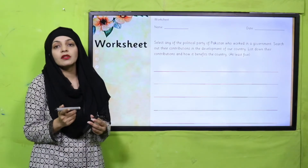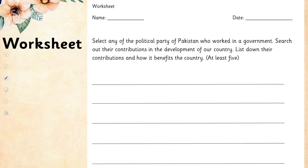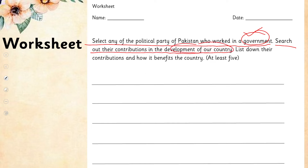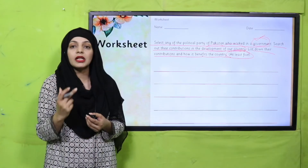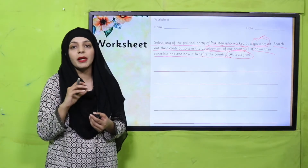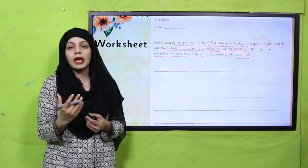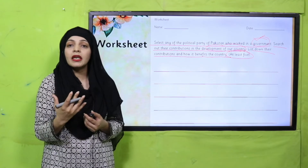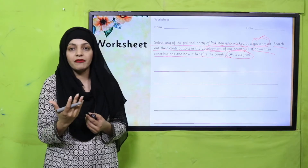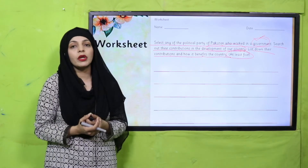For practice, you can download this worksheet from the description box below this video, or get it in print form from your teacher. Write down your name and date. Select any political party of Pakistan who has worked in government — jis ne government mein kaam kiya ho. Search out their contributions in the development of the country. List down at least five contributions and how each benefited the country. Pause the video and quickly finish it.